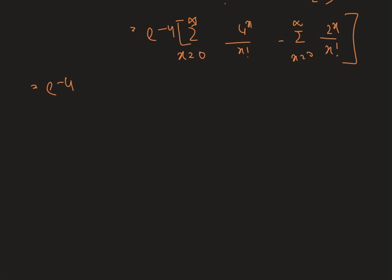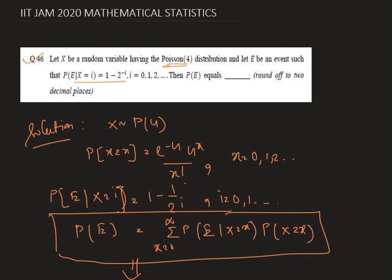Now we can write it as e to the power minus 4, times e to the power 4 minus e to the power 2. Hence this reduces to 1 minus e to the power minus 2, and this is nothing but 1 minus 0.135, which is 0.865. So our required answer is 0.86.